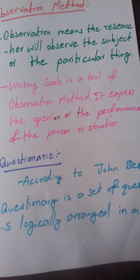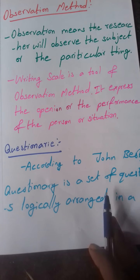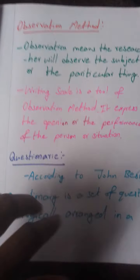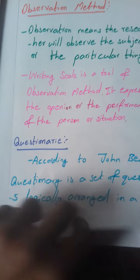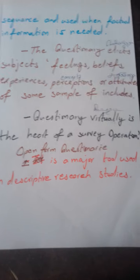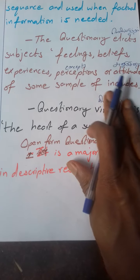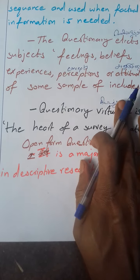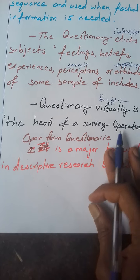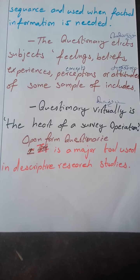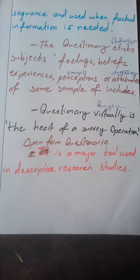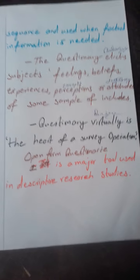According to John Best, a questionnaire is a set of questions logically arranged in a sequence, and used when factual information is needed. The questionnaire affects subjects' feelings, beliefs, experiences, perceptions, or attitudes of some sample. The questionnaire is virtually the heart of the survey operation. The open form questionnaire is a major tool used in descriptive research studies.